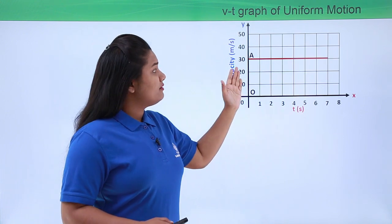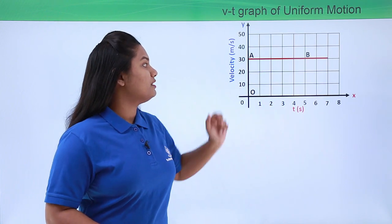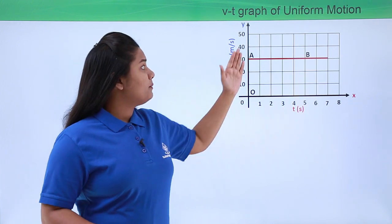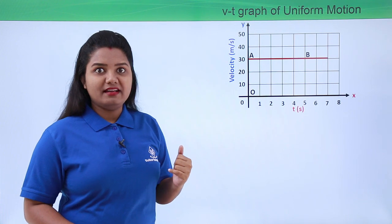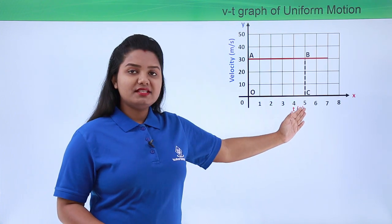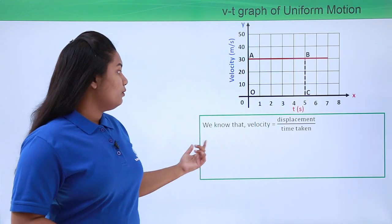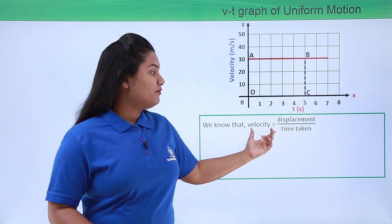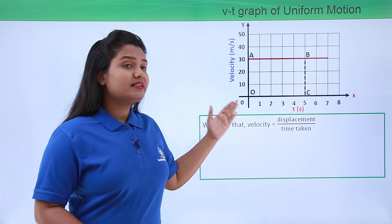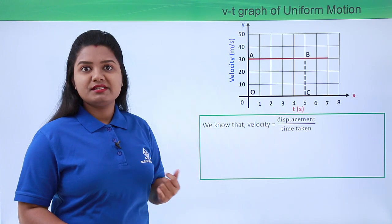Now let's say we want to find the displacement of this body at point B. The first step is to drop a perpendicular from point B to the time axis. Let the point where the perpendicular touches the x-axis be point C. We know that velocity is given by displacement divided by time taken, and here we need to find the displacement.